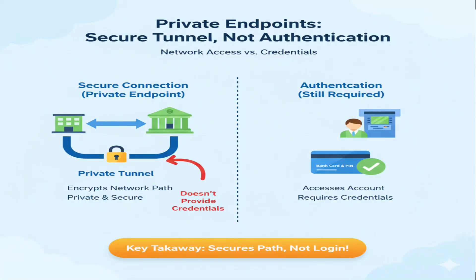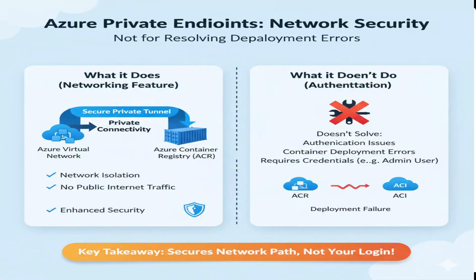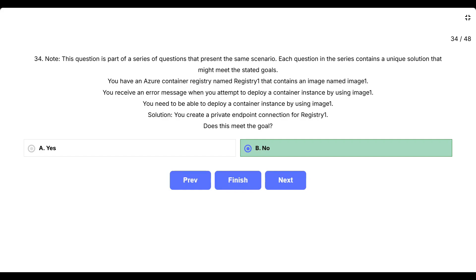Think of private endpoints like building a secure private tunnel between your office and the bank instead of walking through public streets. While this tunnel makes the connection more secure and private, you still need your bank card and PIN to access your account once you get there. Similarly, private endpoints secure the network path but don't provide authentication credentials. The correct answer is no. Creating a private endpoint connection does not meet the goal of resolving container deployment errors. Private endpoints are a networking feature that enables secure private connectivity to Azure Container Registry within a virtual network, preventing traffic from flowing over the public internet. However, the core issue remains authentication, not network connectivity. From our first question in this series, we established that enabling the admin user was the correct solution because it provides the authentication credentials needed for container instance deployment.